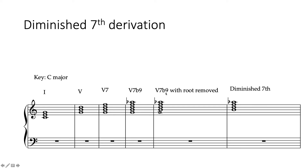If we remove the root of that dominant 7th flat 9 chord, we get B, D, F, A flat — which is our diminished 7th.